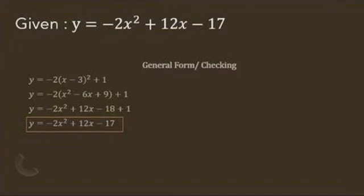We have to expand the x minus 3 squared, which will become x squared minus 6x plus 9. Then we have to distribute the negative 2 to the terms inside the parenthesis, and it becomes y equals negative 2x squared plus 12x minus 18 plus 1.